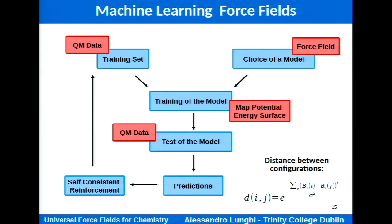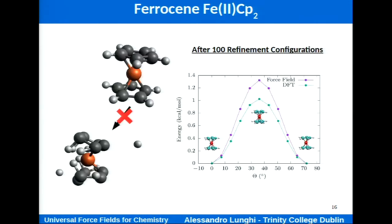In active learning, you first generate an initial training set, train your model, and start molecular dynamics while monitoring the structures. Once in a while you compare the current structure with the reference training set, and if the structure is too far from where the model was trained, you stop the calculation, do a new DFT calculation, and update your model. For ferrocene, after sampling 100 new configurations at high temperature, the dynamics becomes perfectly stable. We can reproduce the very small rotation barrier between the two rings, which is not a trivial exercise.